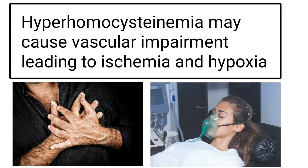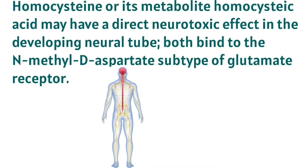Hyperhomocysteinemia may result in vascular dysfunction that leads to ischemia and hypoxia. Both homocysteine and its metabolite homocysteic acid bind to N-methyl-D-aspartate receptors, which may cause direct neurotoxicity in the developing neural tube.